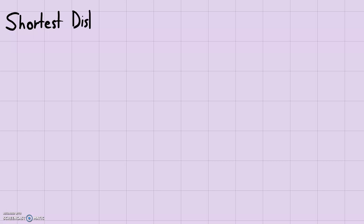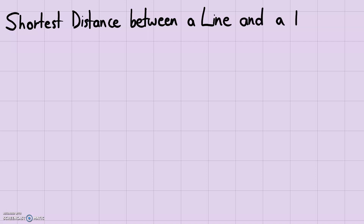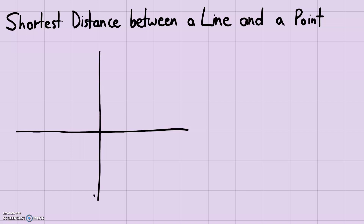Today we're going to be finding the shortest distance between a line and a point. If we have two points on the Cartesian plane, the shortest distance between those two points is a straight line. To find that shortest distance, you form a right triangle and use the Pythagorean theorem in the form of the distance formula. Now, finding the shortest distance between a point and a line is a little more complicated.